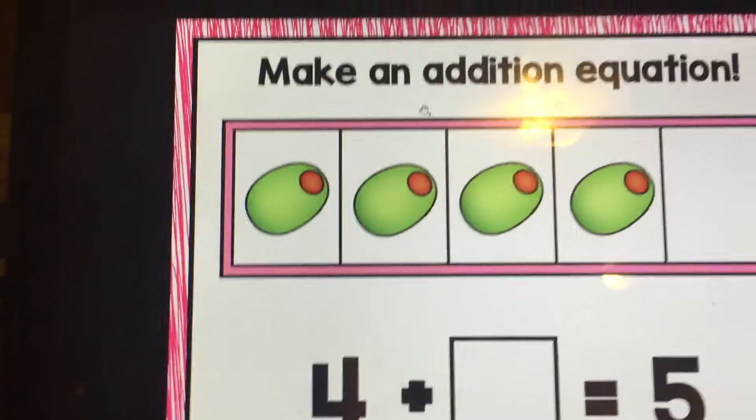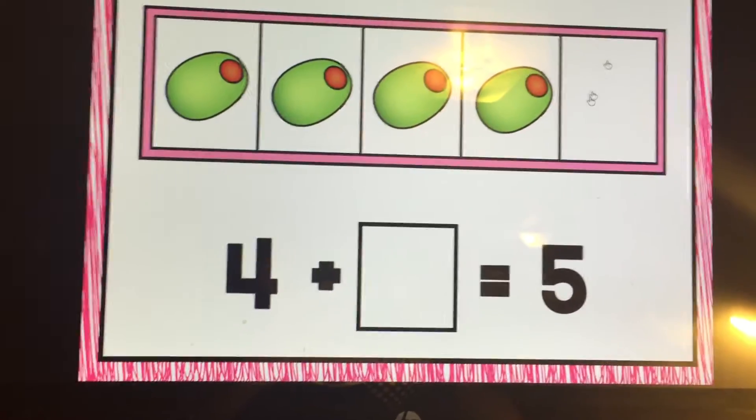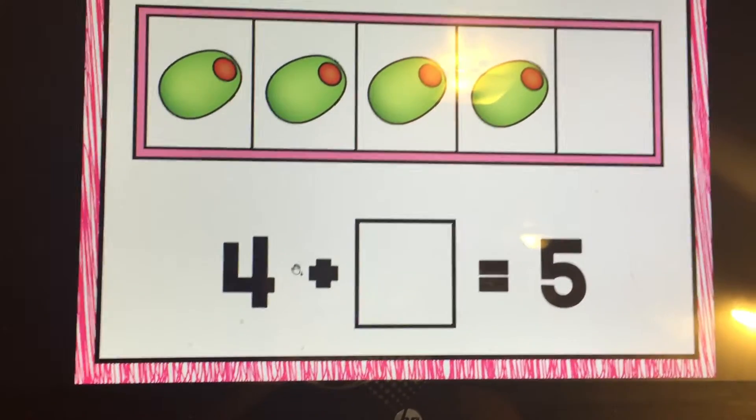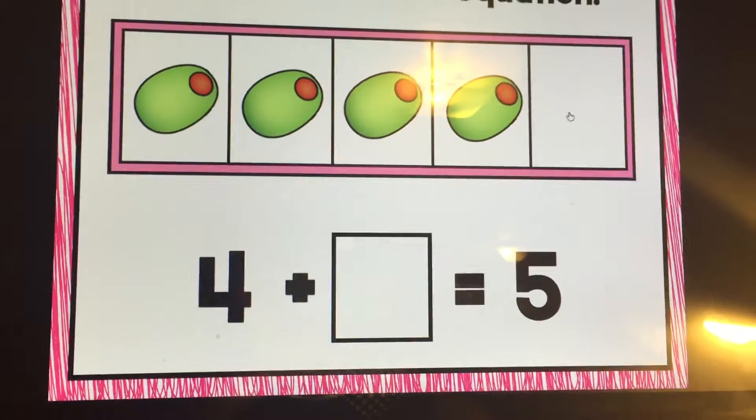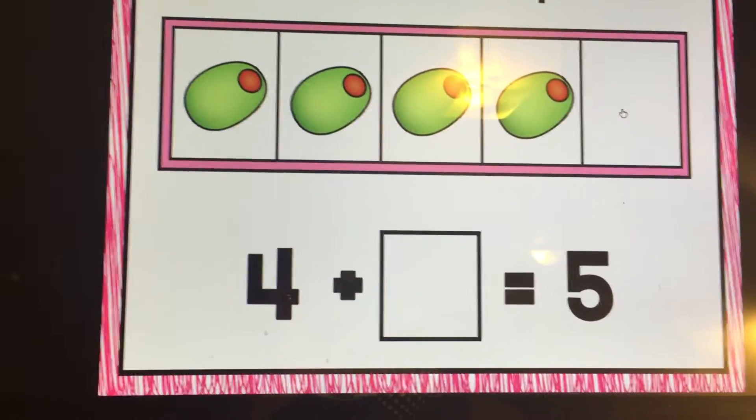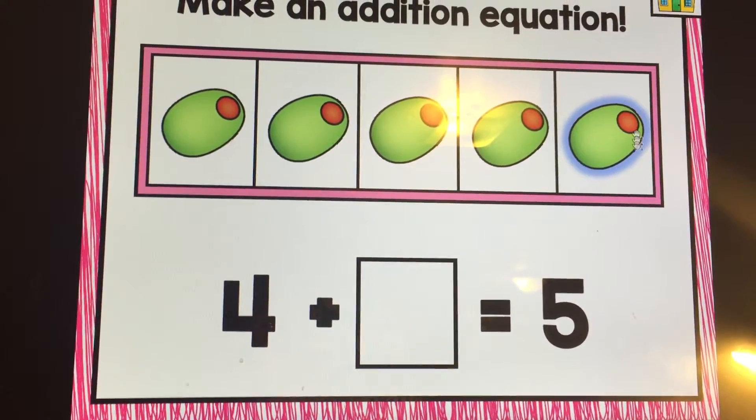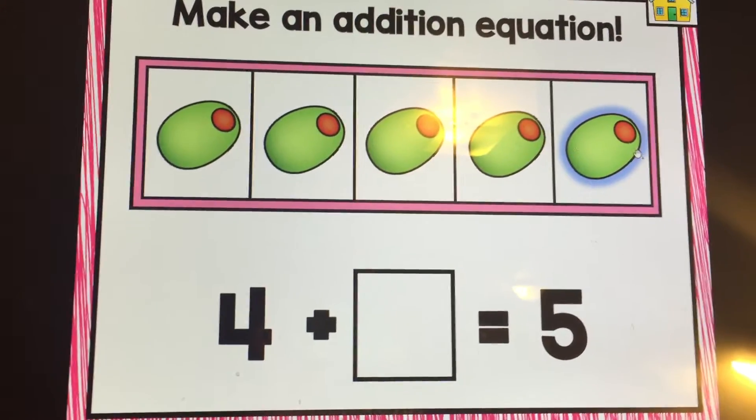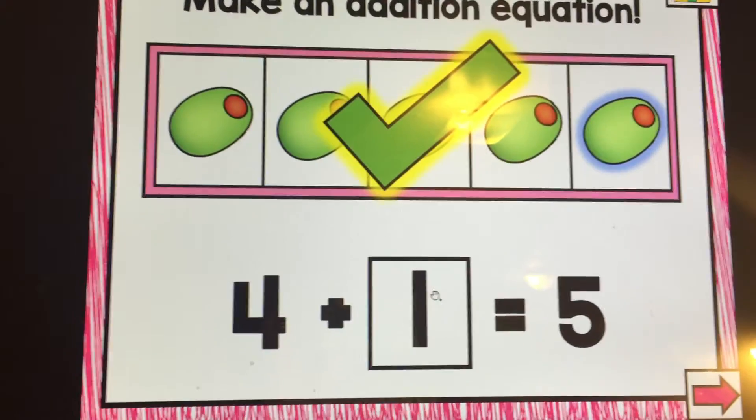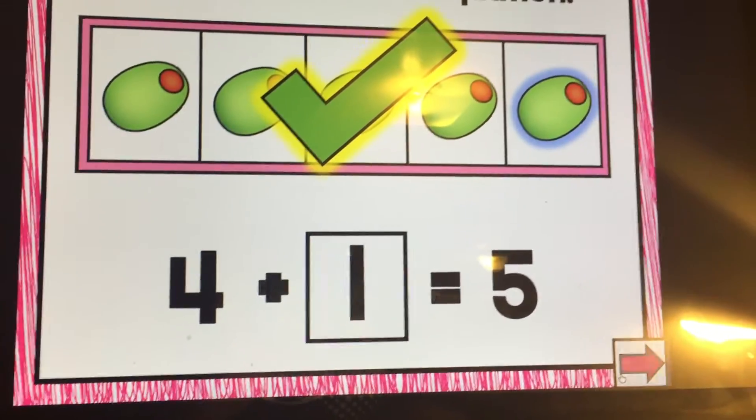Let's make an addition equation. We have four. How many more do we need to make five? What is four plus something equals five? What is it going to be? So let's click on the empty spaces and bring up some other olives. How many more do we need to fill that up? How many are there right here? Four plus one equals five. Good job.